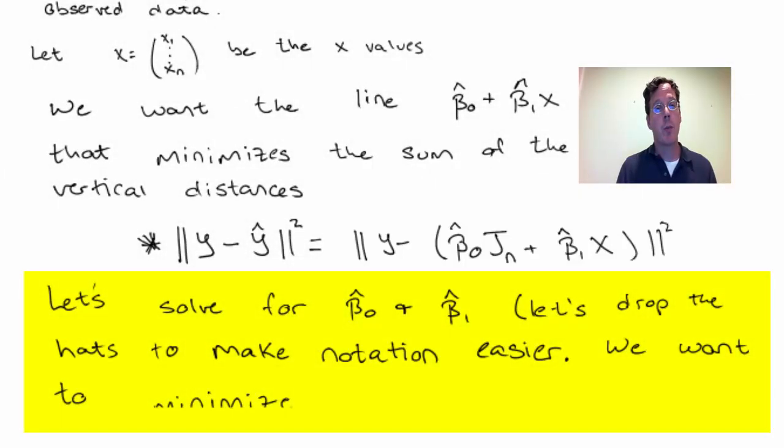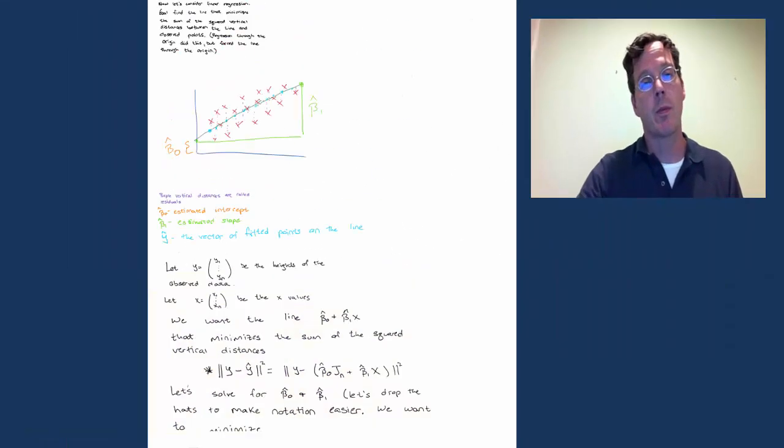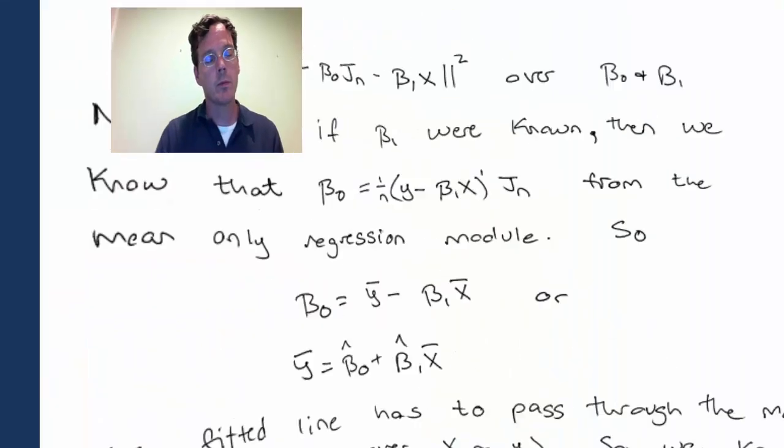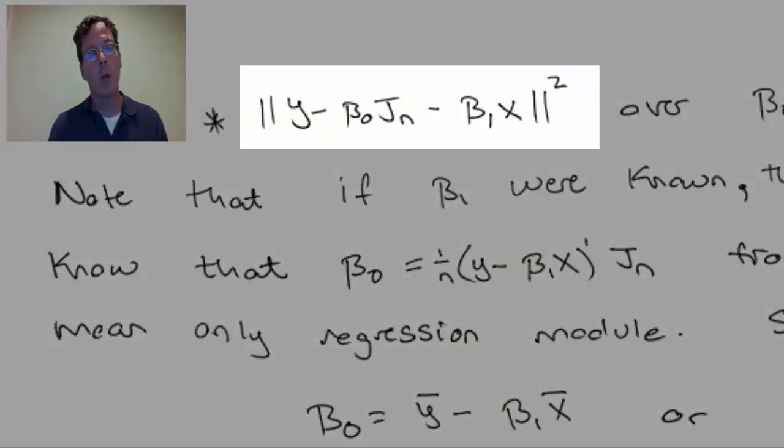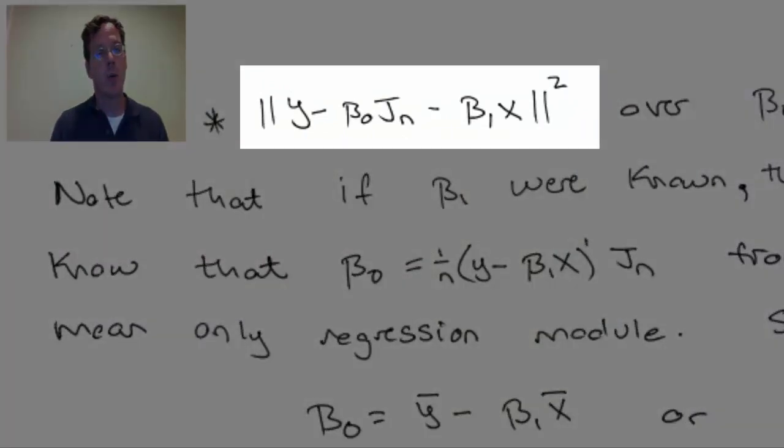So let's solve for beta 0-hat and beta 1-hat. Let's drop the hat notations because when we think of it as a function, it's preferable to talk about the general variables. And then when we actually get the specific estimates, we put the hat over them. So we want to minimize the function norm y minus beta 0-hat jn minus beta 1-x quantity squared.